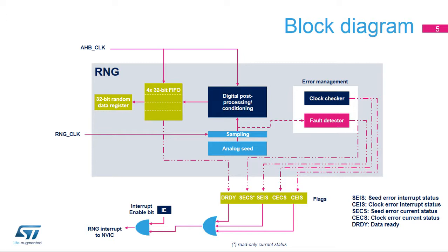In parallel, an error management block verifies the correct seed behavior and the frequency of the RNG source clock. Status bits are set and an interrupt is triggered if an abnormal sequence is detected in the seed or if the RNG frequency is too low.